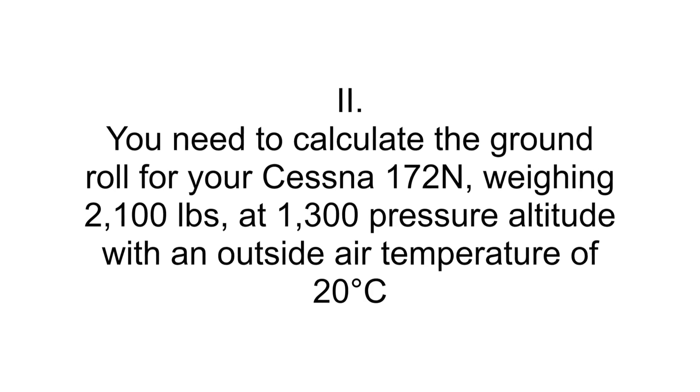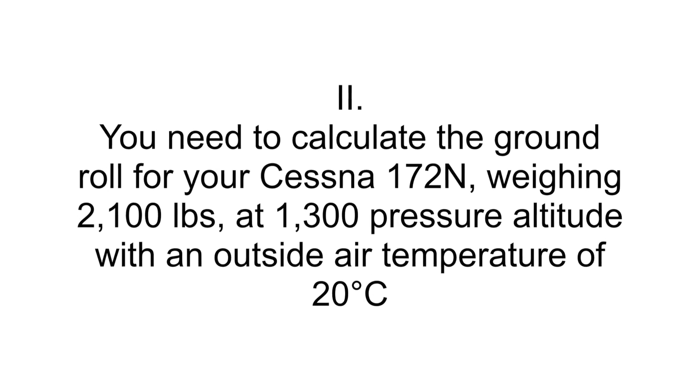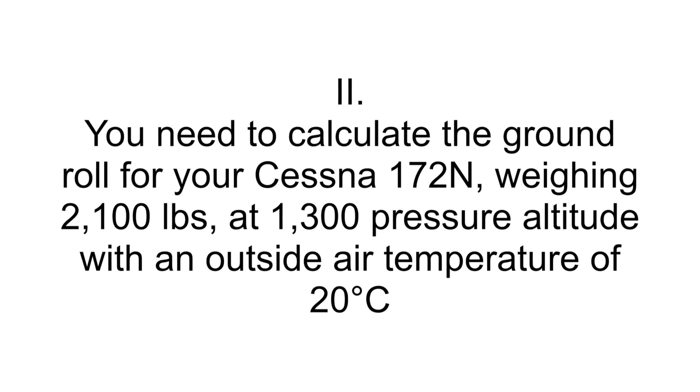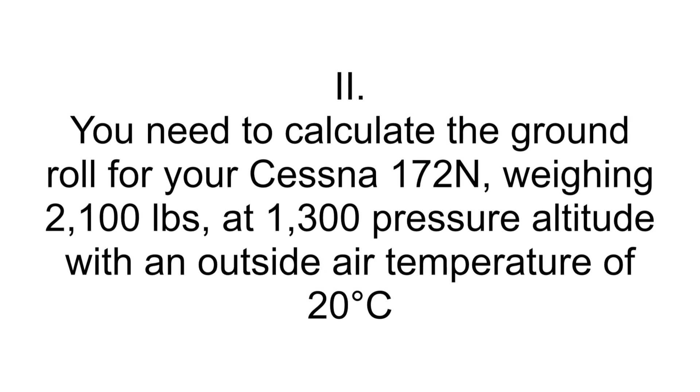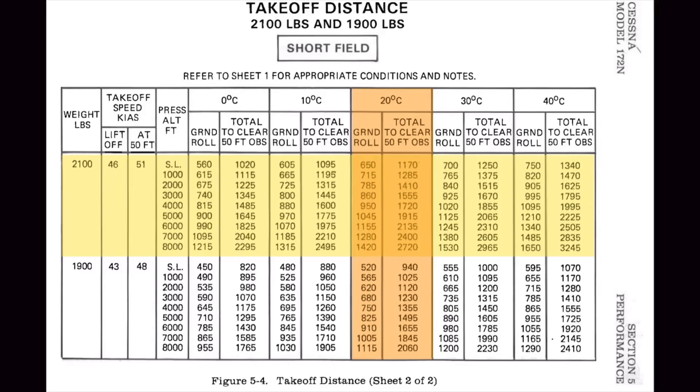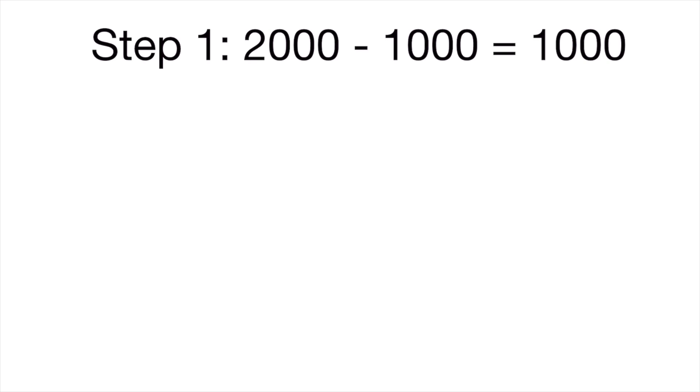Now let's look at the other problems. The second problem is to calculate the ground roll for our Cessna at 2,100 pounds, 1,300 feet pressure altitude, and 20 degrees Celsius. Step 1: find the difference between the nearest index values. Looking at the chart, the first is 1,000 feet and the second is 2,000 feet. Subtracting them leaves 1,000 feet.